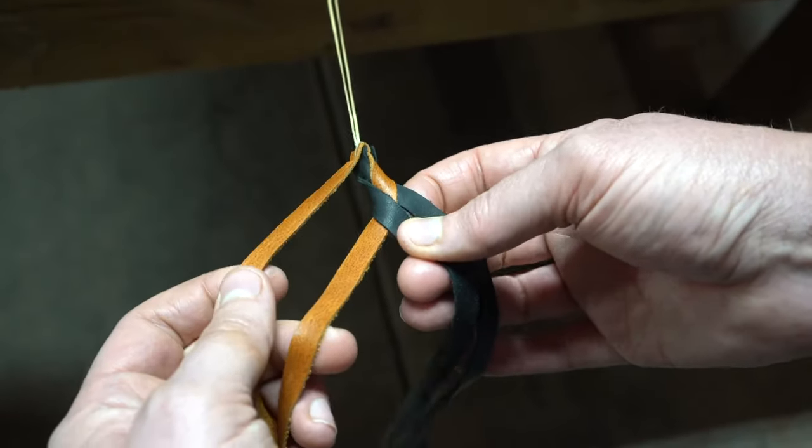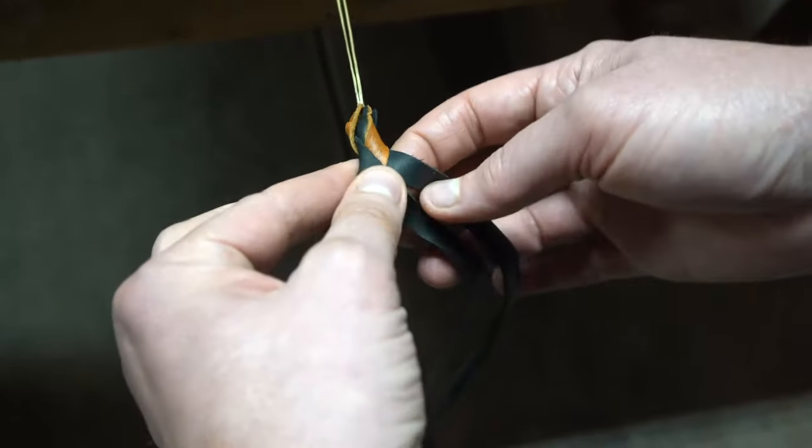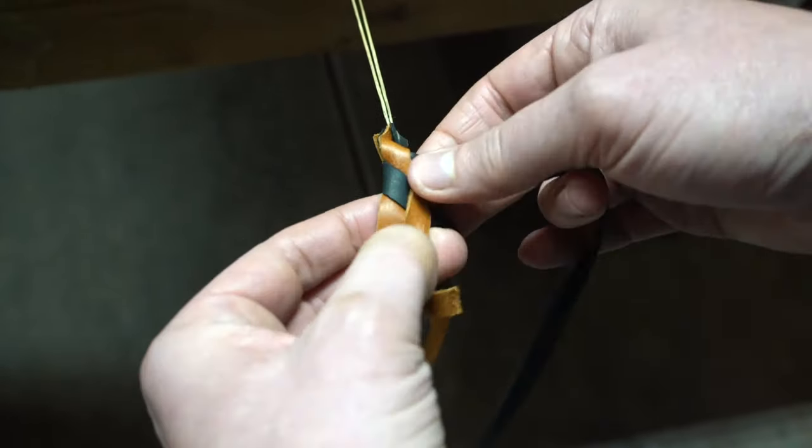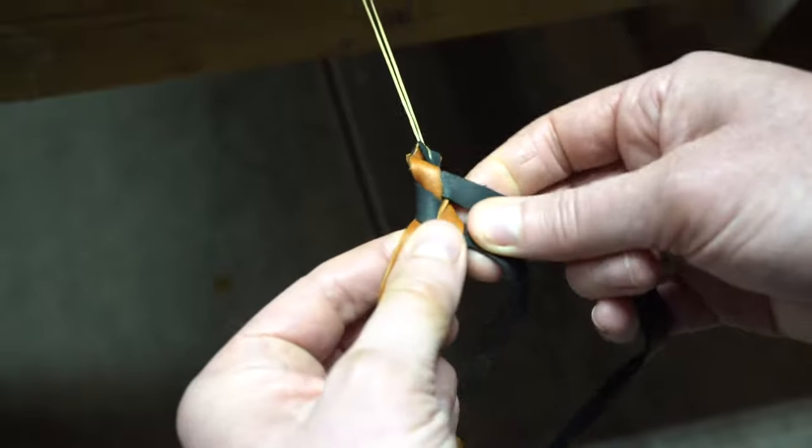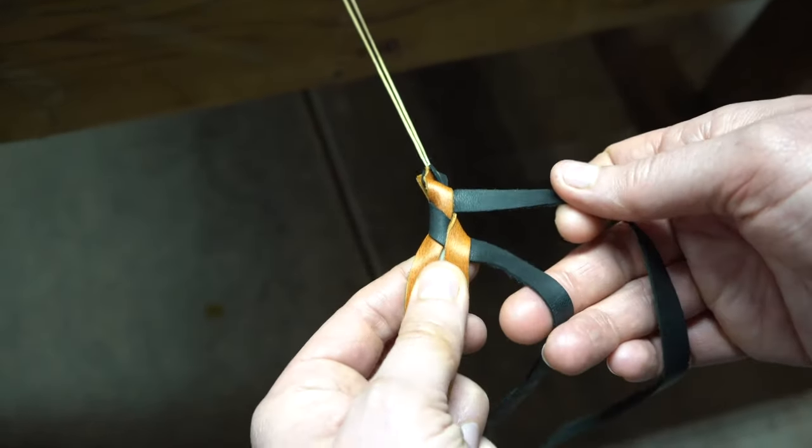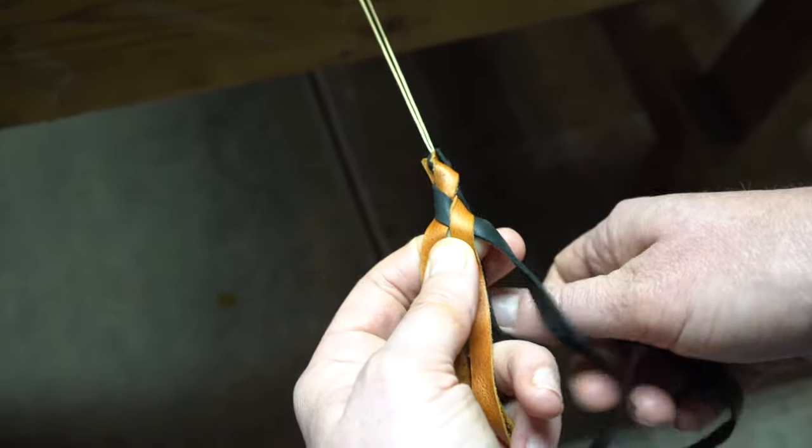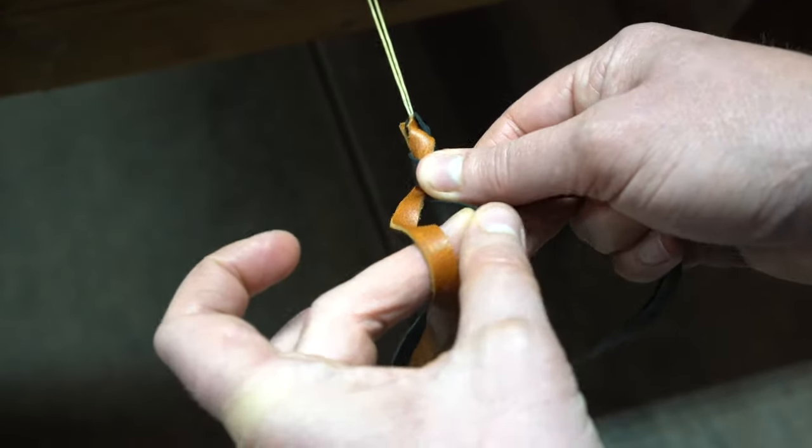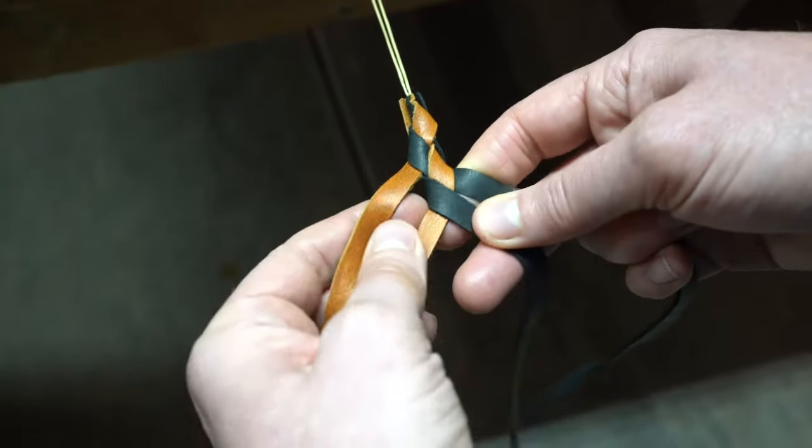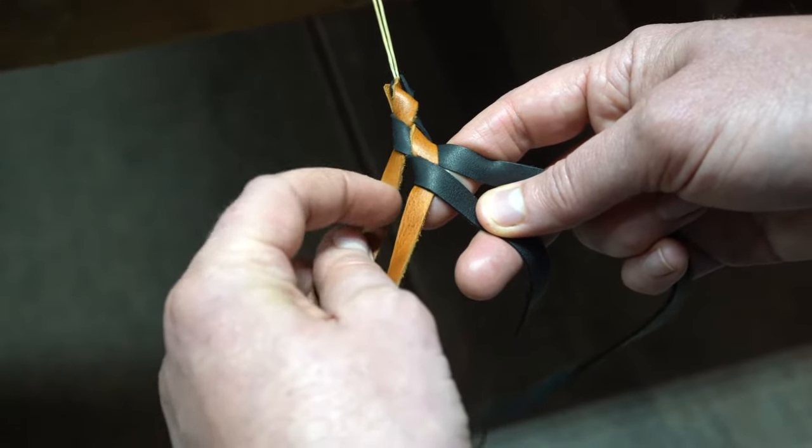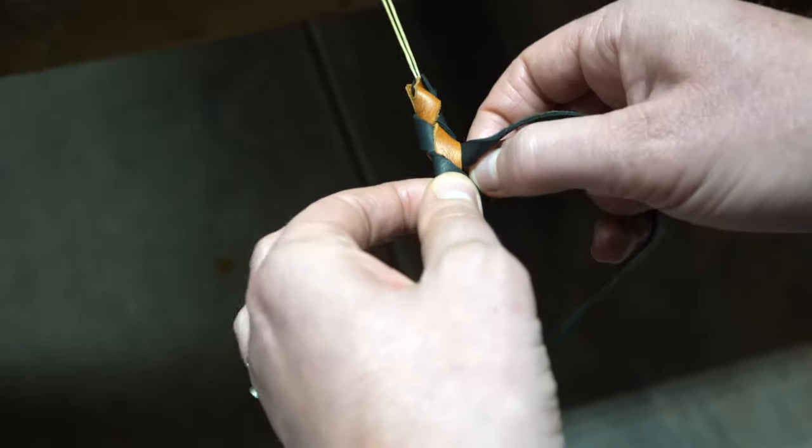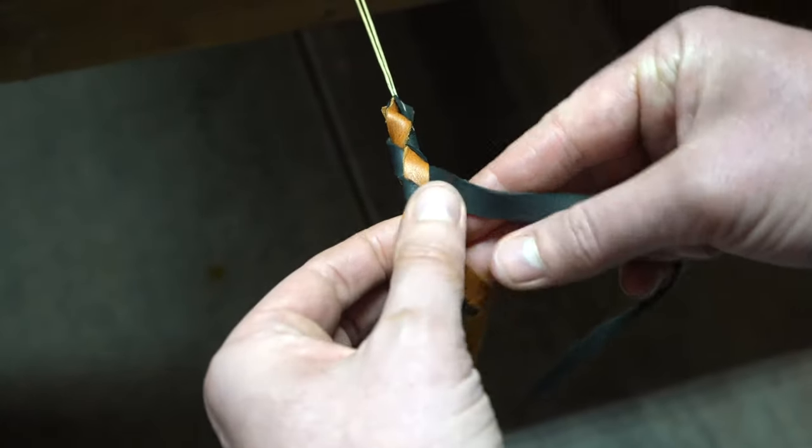Take number one, around the back, come between three and four. You're flipping it over that middle strand. So number one, around the back, between three and four, and flipping it over the middle.